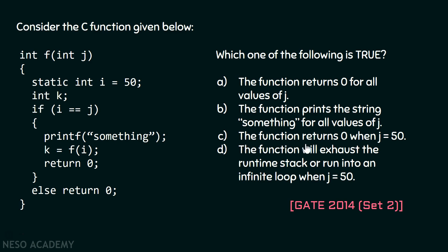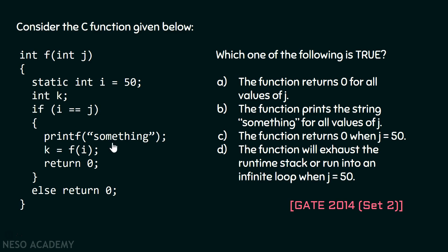Let's see option C: the function returns 0 when j is equal to 50. Taking j equals 50, inside this function there is one variable i whose value is initialized to 50, and it is declared as static. This means if you call this function once again, it will retain its value. We check whether i equals j — since both are 50, this condition is satisfied. We print 'something' on the screen and then call this function f once again. This is recursion.